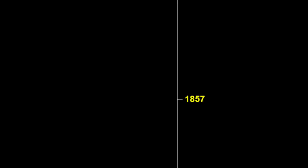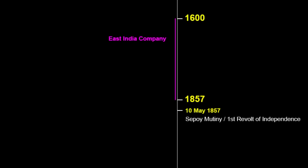The previous part ended at 1857, so we pick up from there. 1857 is regarded as an important year in the history of the Indian subcontinent. The revolt of 1857 saw the end of the East India Company's rule in India. From 1600 to 1857, the Indian subcontinent was ruled by a trading company called the East India Company. After 1857 till 1947, the subcontinent came under the direct rule of the British Crown — what we also refer to as the actual British Raj.